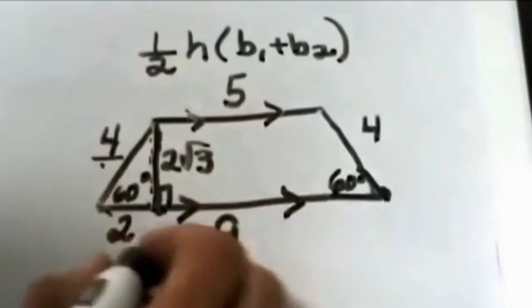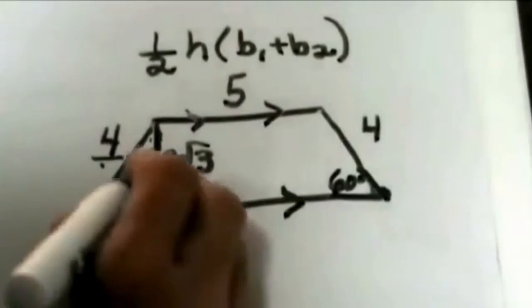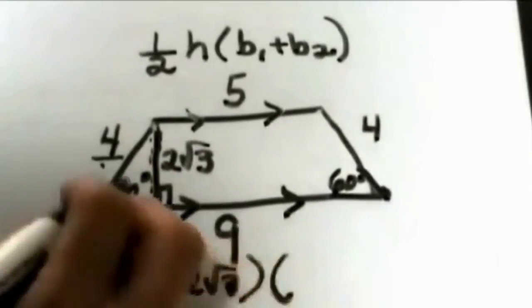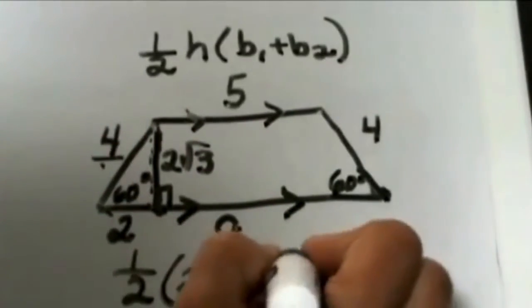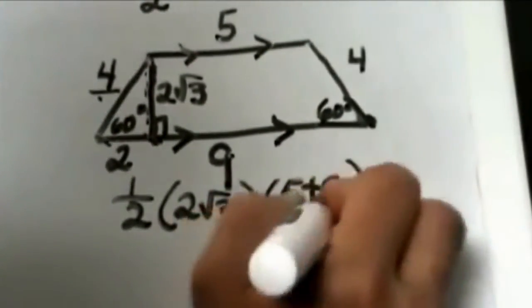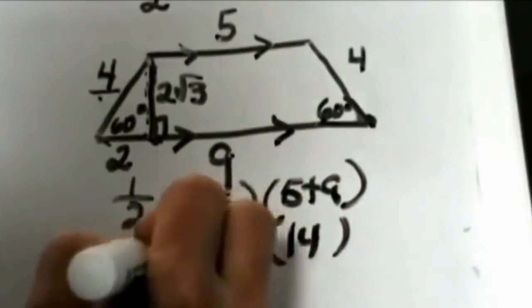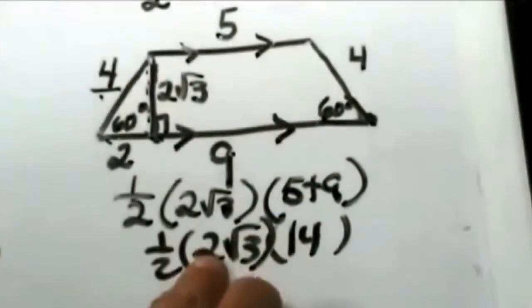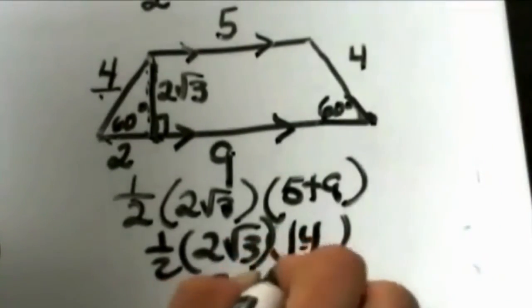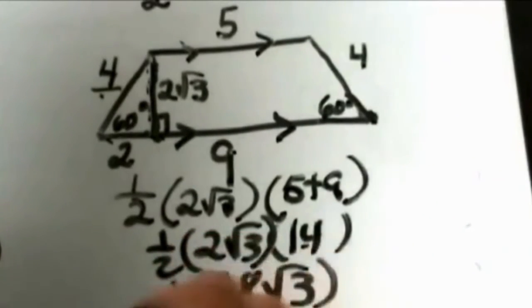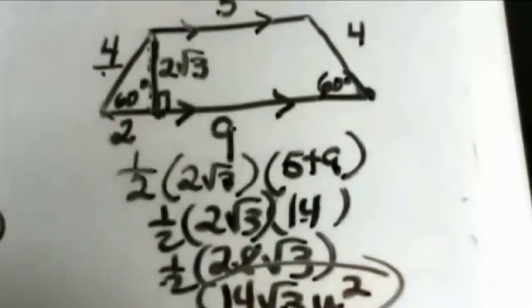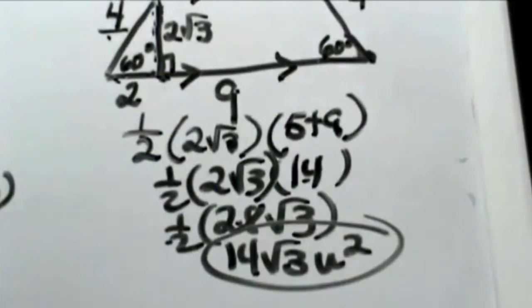Now we can use our formula. One half our height, we just figured out, was 2 square root 3, times our bases added together, so the sum of the bases. The sum of the bases is 14 times 2 square root 3, and you're going to multiply that product by half. So 2 times 14 is 28 square root 3 all multiplied by half. Half of 28 is 14 square root 3 units squared. And that is how you would find the area of the trapezoid.